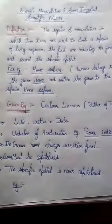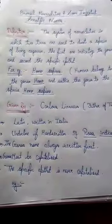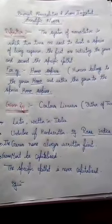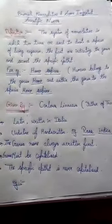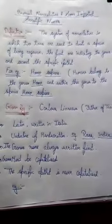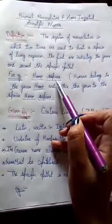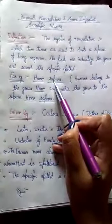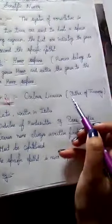In this video we are going to talk about binomial nomenclature and some important scientific names for your board exams. Binomial nomenclature is the system of nomenclature in which two terms are used to denote a species of living organism — the first indicating the genus and the second the specific epithet. For example, in 'Homo sapiens,' 'Homo' indicates the genus and 'sapiens' the species. This entire binomial nomenclature system was given by Carolus Linnaeus, who is also called the Father of Taxonomy.